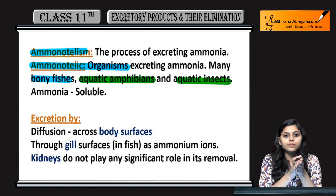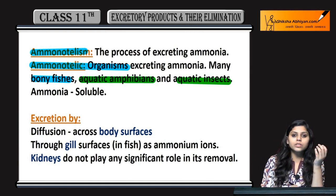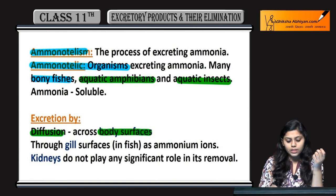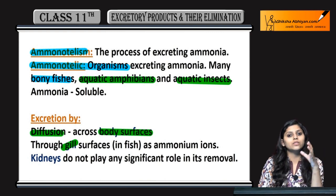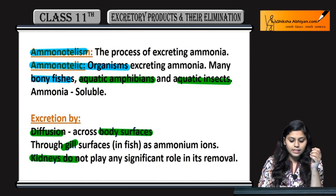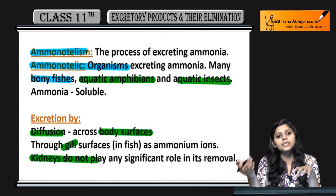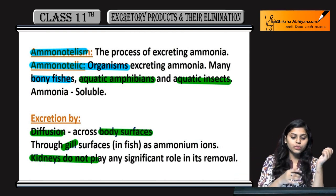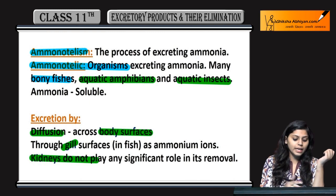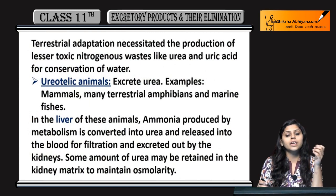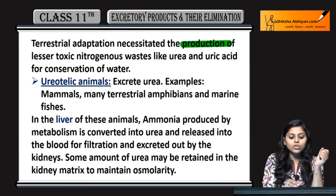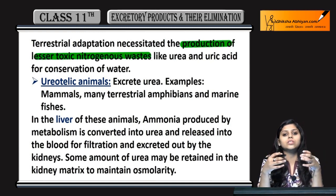Ammonia is soluble in water and its excretion occurs by diffusion through body surfaces or through gills in the case of fishes. Ammonotelism mein kidney koi role play nahi karti — kidneys do not play any role in ammonia removal.